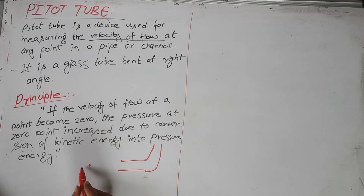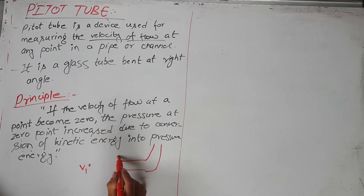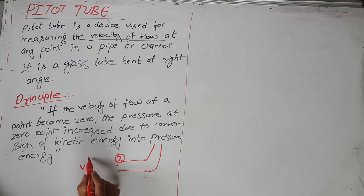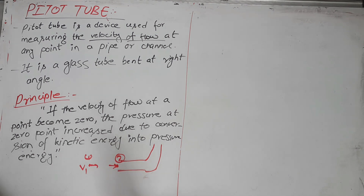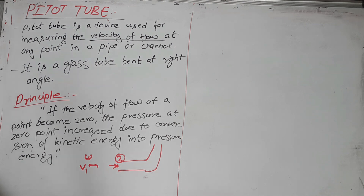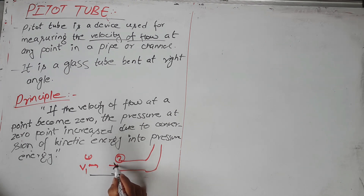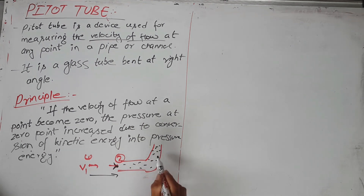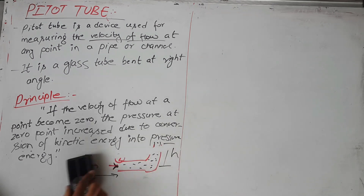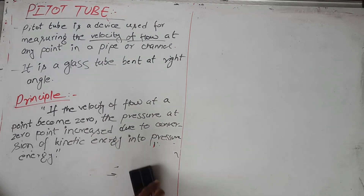Consider point 1 with velocity V1 and point 2 with velocity V2. When fluid — say water — moves downstream, at point 2 (the inlet of the pitot tube) the velocity of the water becomes zero, and this gets converted into a pressure head — a rise in height. This is the principle of the pitot tube.